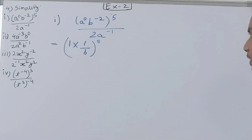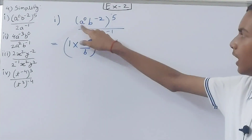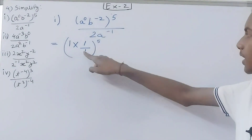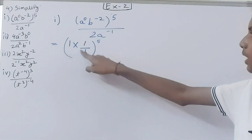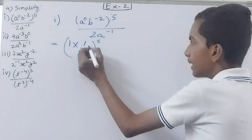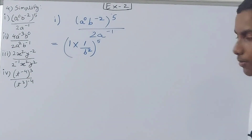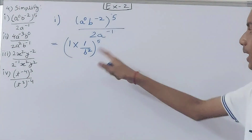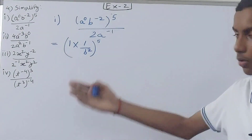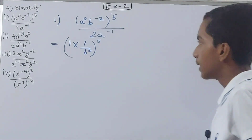We leave the power 5 as it is for now. So 1 into b to the power minus 2 gives us 1 by b. Also, don't forget the square sign here — it's very important. This square will become plus because we have reciprocated.